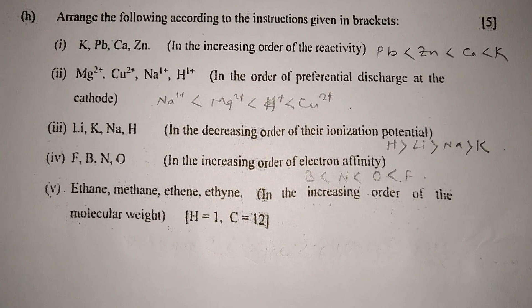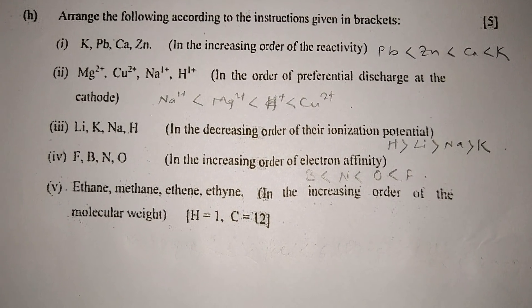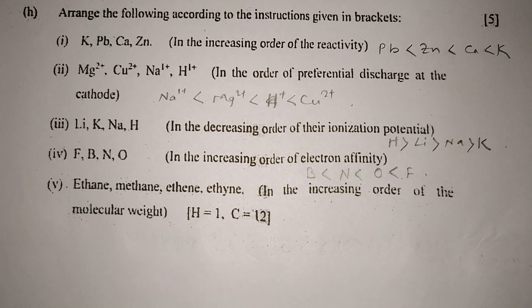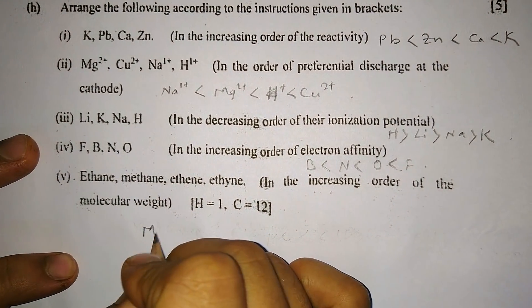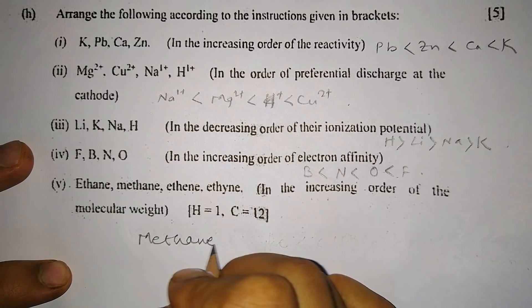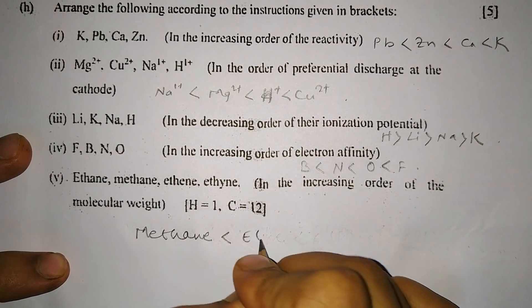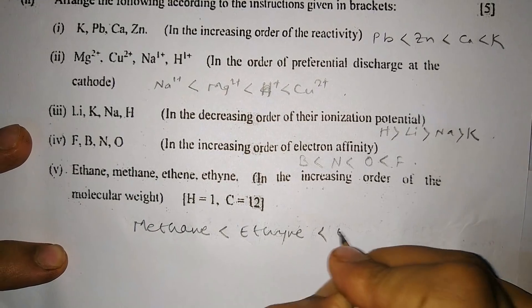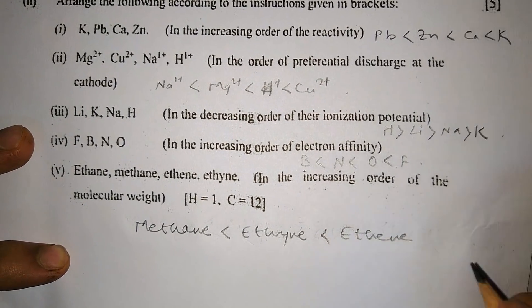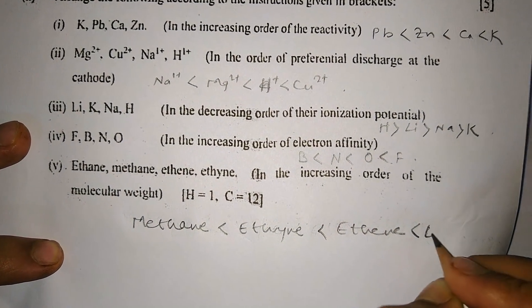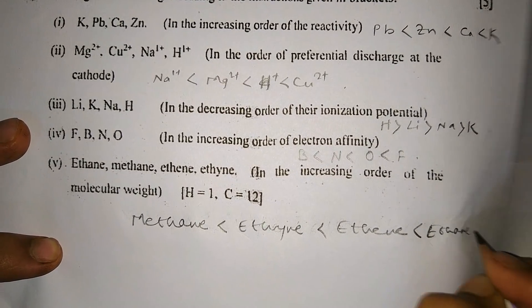Number four: Fluorine, bromine, nitrogen, and oxygen in the increasing order of electron affinity. Electron affinity increases while moving left to right, that is across a period. Number five: Ethyne, methane, ethene, ethane - arrange them in the increasing order of molecular weight. The order will be methane CH4, then ethyne C2H2, then ethene C2H4, and then ethane C2H6.